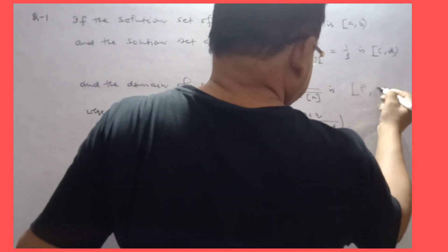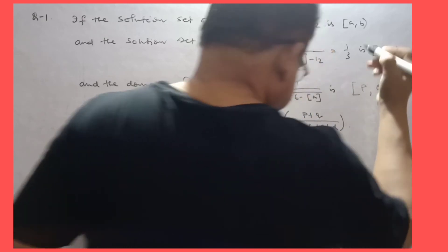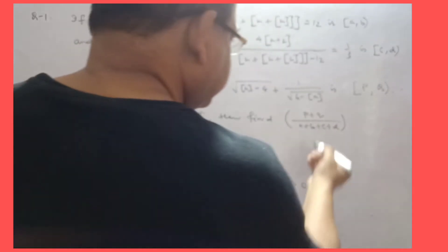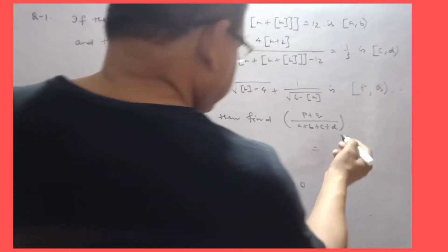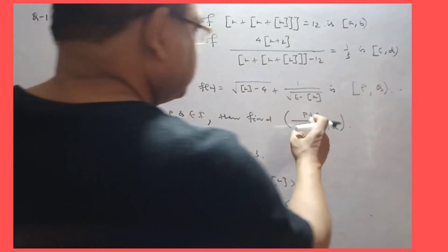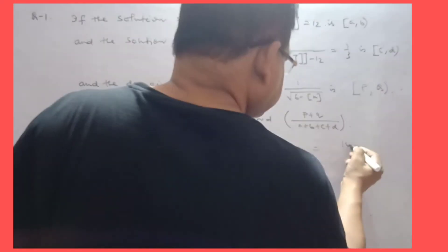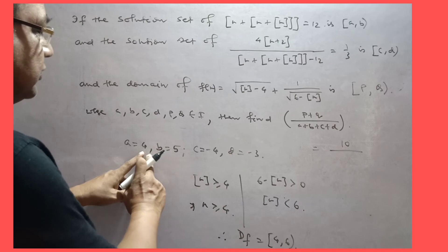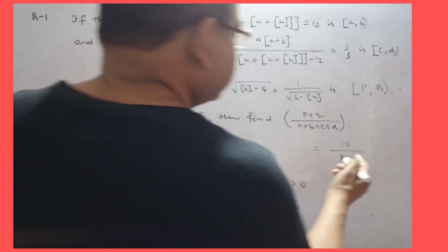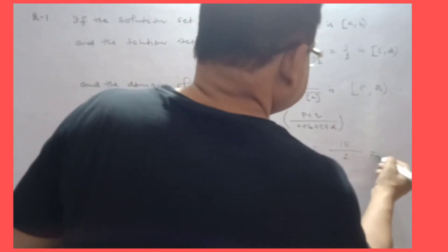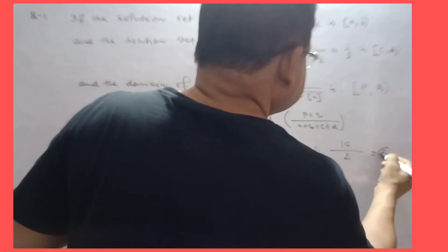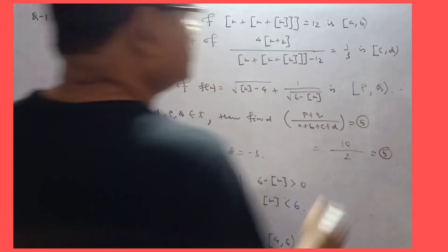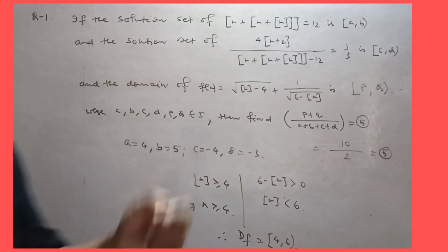So P = 4 and Q = 6. Adding all values — numerator and denominator cancel — 5 minus 3 gives the answer equal to 5.